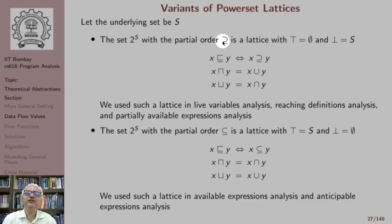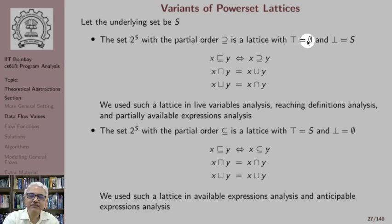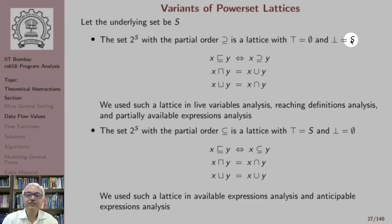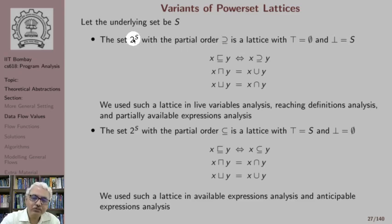Note that the superset relation is a valid partial order because it is reflexive, transitive, and anti-symmetric. In such a lattice — a power set with superset relation — the top element is the empty set, because every subset of S is a superset of the empty set. Similarly, the bottom element of this lattice under the superset relation is the universal set S, since S is a superset of every element in 2 raised to S. We define x is weaker than y if x is a superset of y.